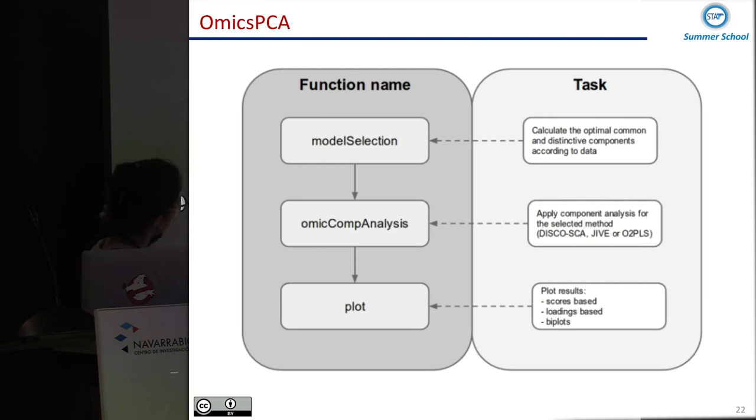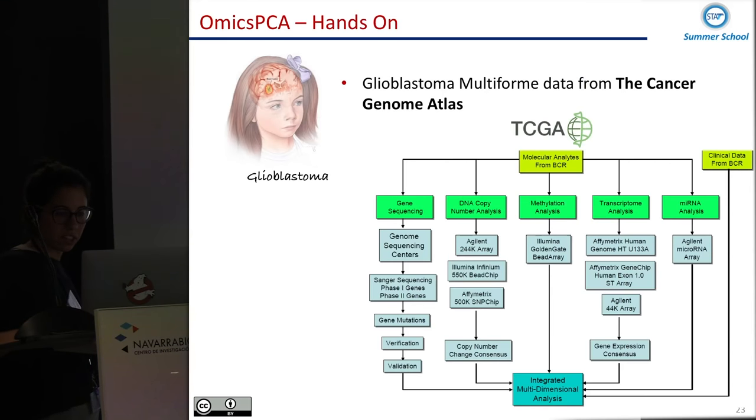So how it works and what we will see now in the conversation. First of all, we apply a model selection method to calculate the optimal number of components, of common components and distinctive components in the data. Then running the omics component analysis that we will define the method that we want to apply. We identify the common and distinctive PCA data. And finally, we can plot the results.